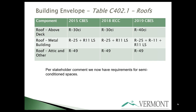Metal buildings now require a two-layer system: previously R25 plus R11 linear, now R25 plus R11 plus an additional R11 linear. Attic values have not changed.